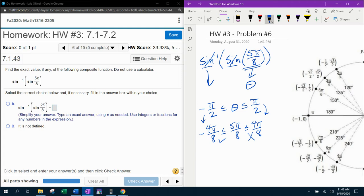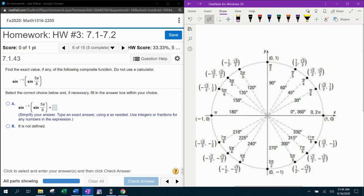I'm going to have to find an appropriate reference angle that will produce the same value as 5π/8. Let's look over here in the unit circle. π/2 is the same as 4π/8. So I know that 5π/8 would be a little bit past 4π/8, which puts me into the second quadrant.